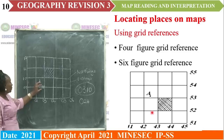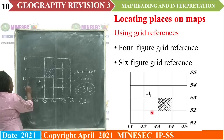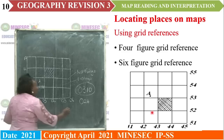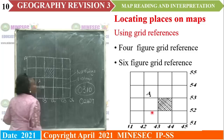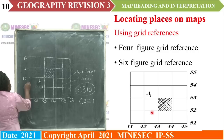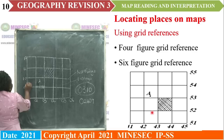I go to the northings section and take the lower value within which the feature is found. The lower value is 09. To get the third figure for the northings, I come again and divide the square between 09 and 10 into 10 units. Come with me: 1, 2, 3, 4, 5, 6, 7, 8, 9, 10. I connect again and count.